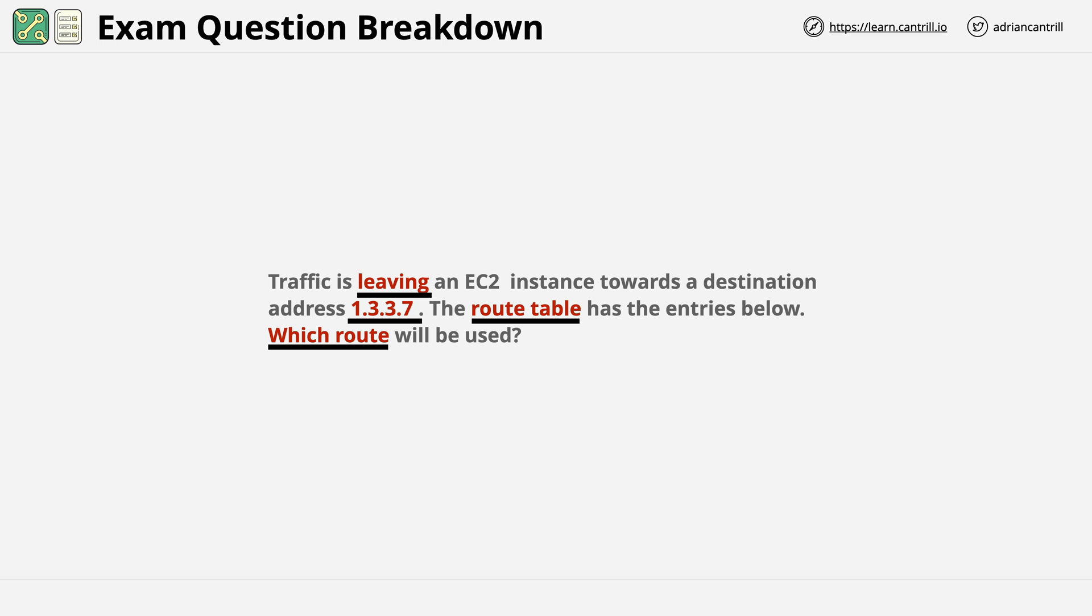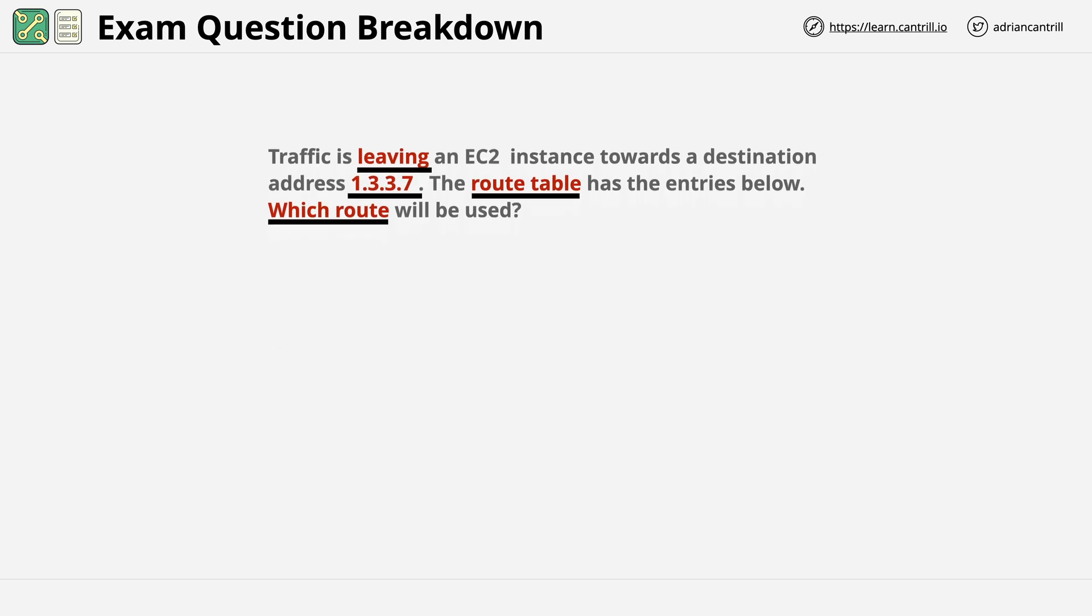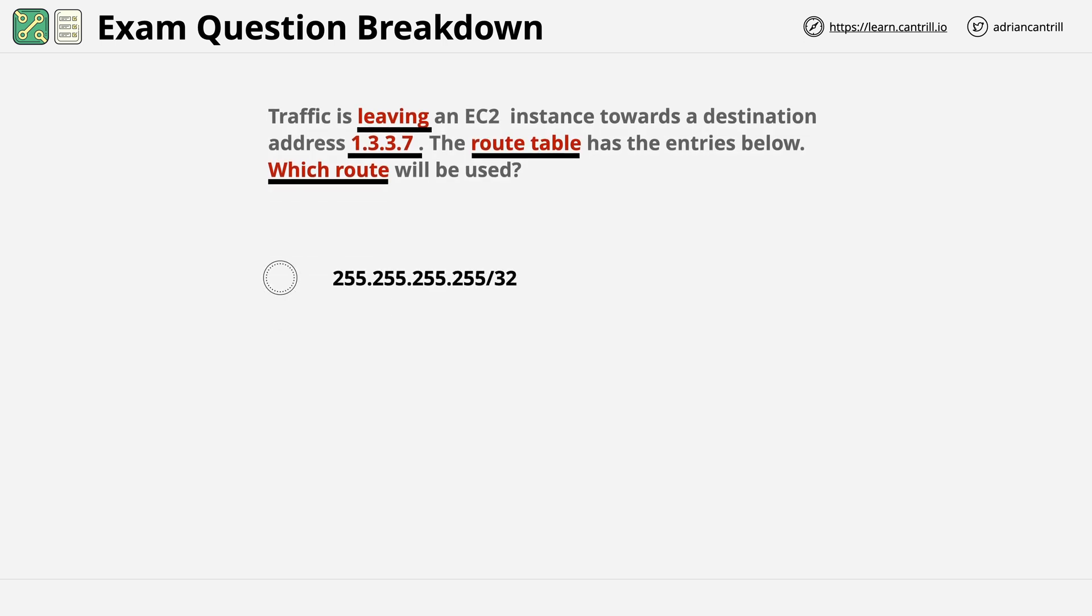Okay, let's look at the answers and see what we have. We have 255.255.255.255/32, 1.3.3.6/32, 1.0.0.0/8, 1.0.0.0/16, and 1.3.0.0/22.